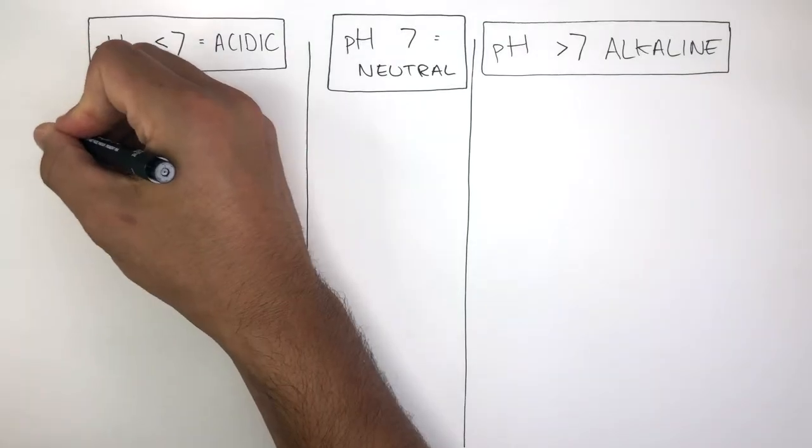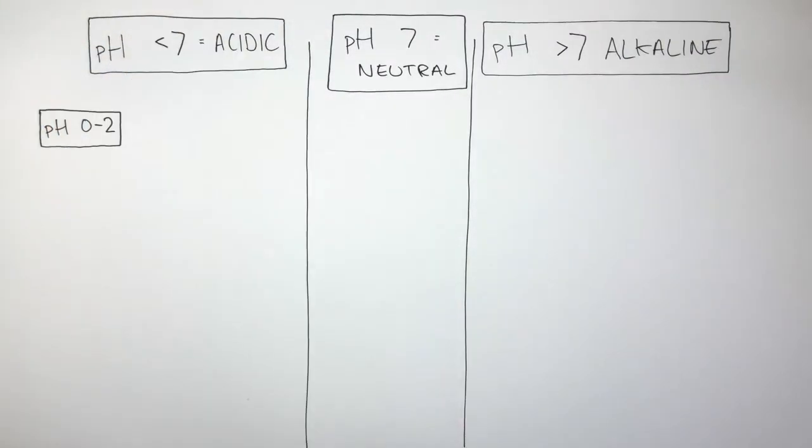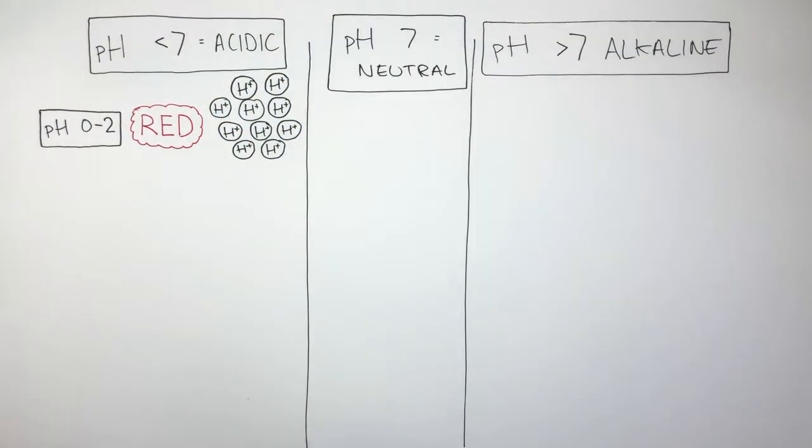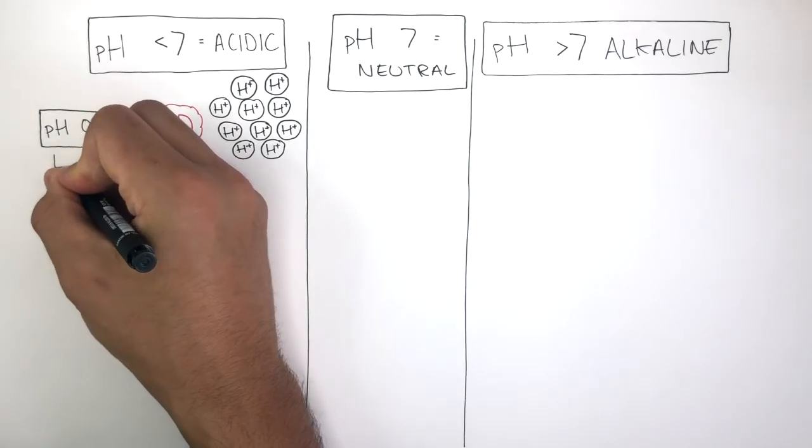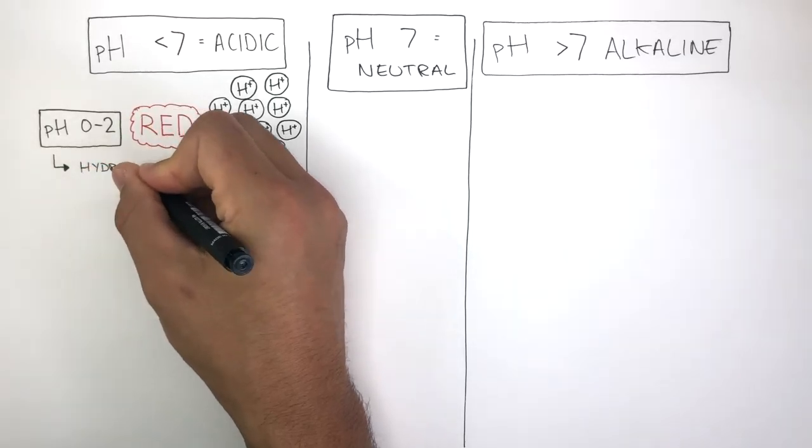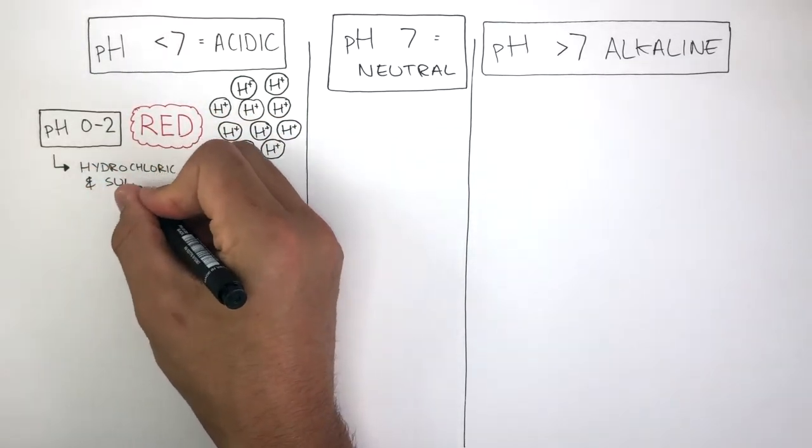If the pH is between 0 and 2, the Universal Indicator solution will be red and the pH will be very low due to there being many hydrogen ions in the solution. Examples of acids with low pHs between 0 and 2 are hydrochloric acid and sulfuric acid.